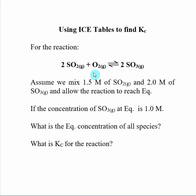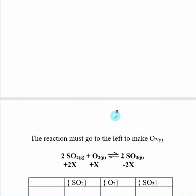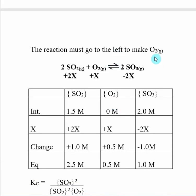because I have not been given any information about O2, you can assume that the initial concentration of O2 is zero. And so I know already that the reaction must go in the direction to make O2 because I cannot have a zero concentration of any species involved in the equilibrium. So I know this reaction must go to the left.